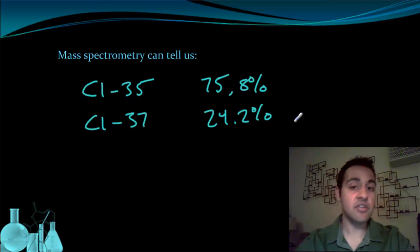Because these percentages do not change from sample to sample, we call them the percent abundance of an isotope. We can use these percent abundances to determine a special kind of average called a weighted average.